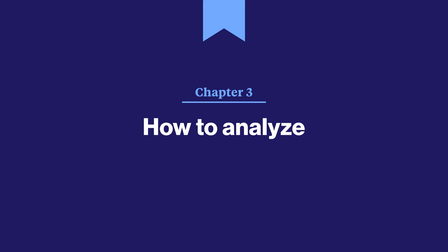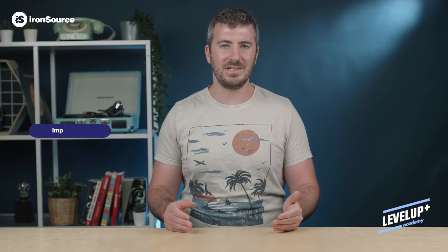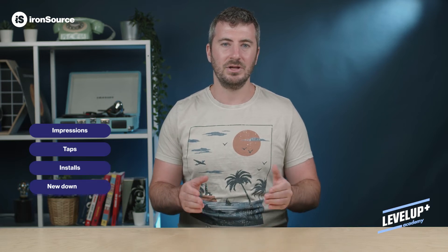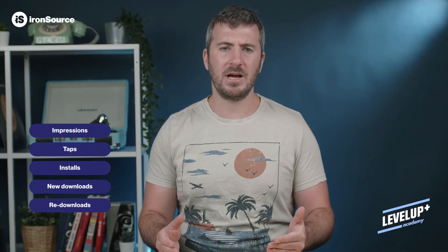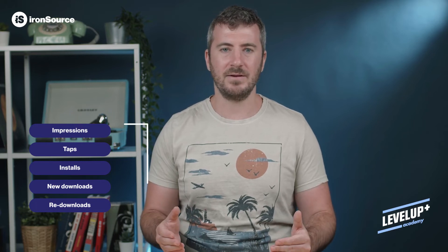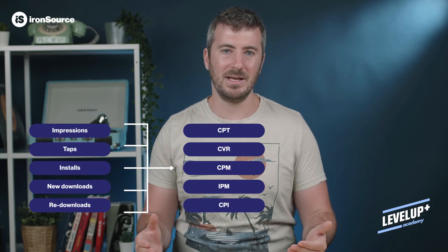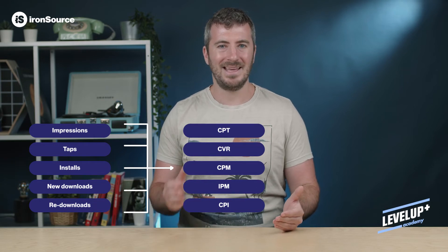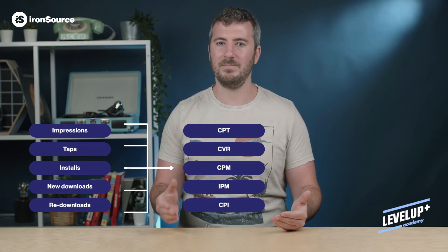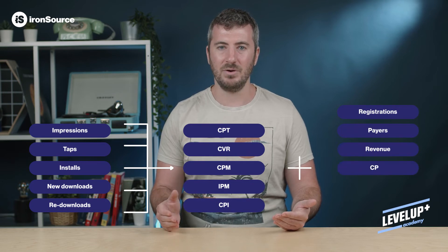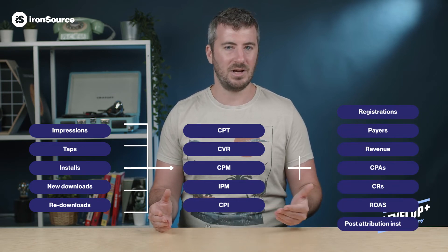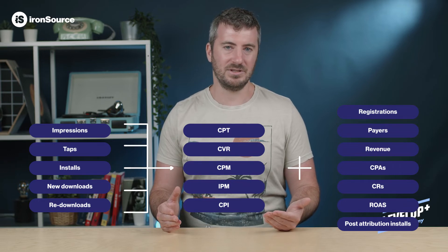Now let's talk about the kind of data you can analyze. Apple Search Ads funnel data lets you see things like impressions, taps, installs, new downloads, or redownloads. For every one of these metrics, you can see the cost and conversion rate — for example, cost per tap, installs conversion rate, CPM, installs per mil, CPI, etc. All this data is a great starting point, but to scale up, it's helpful to consider additional downstream metrics such as registrations, payers, revenue, and their CPAs, CRs, and ROAS, or even post-attribution installs and CPI.